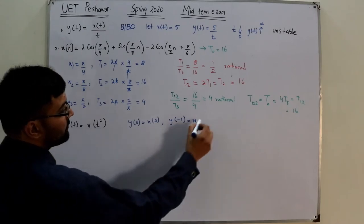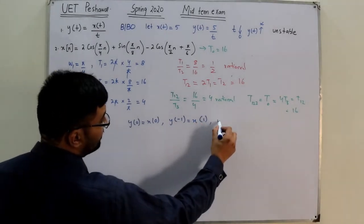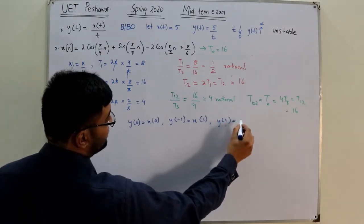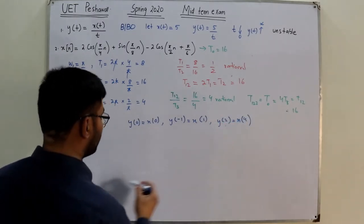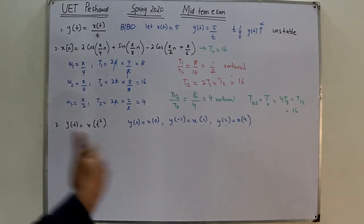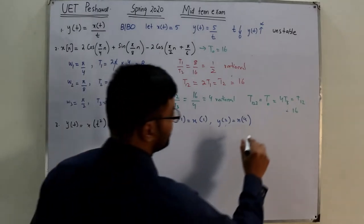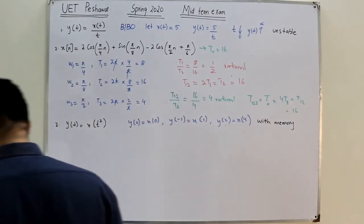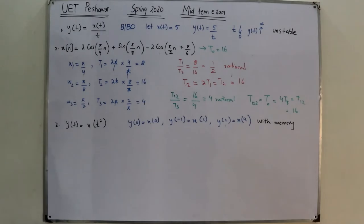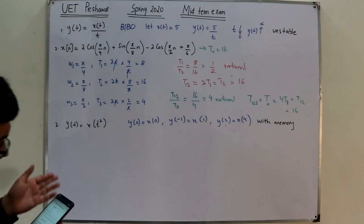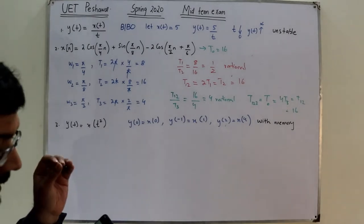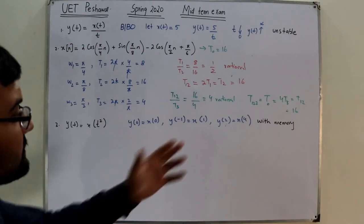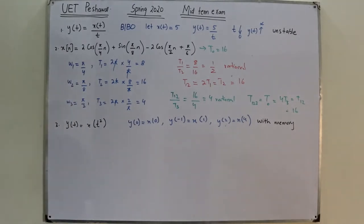y(-1) = x(1) and y(2) = x(4), so the output depends on future or past values rather than only the present. This means it has memory — it is a with-memory (dynamic) system. The answer is false: it is not memory-less.